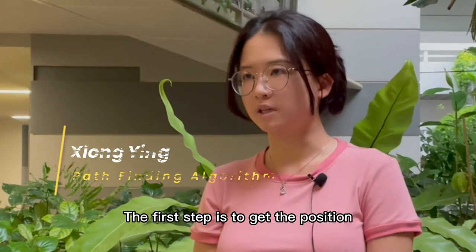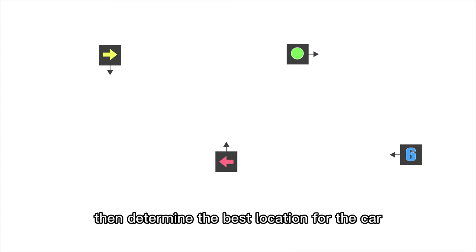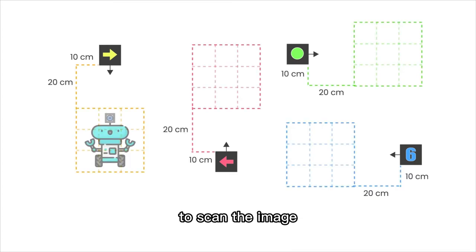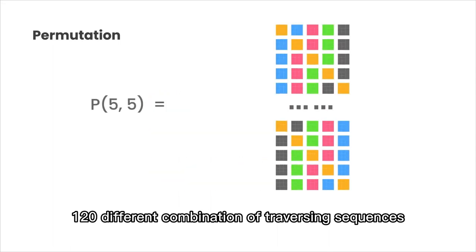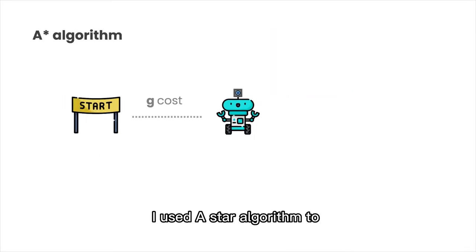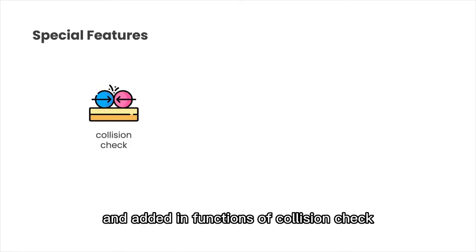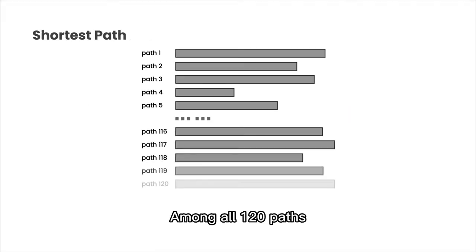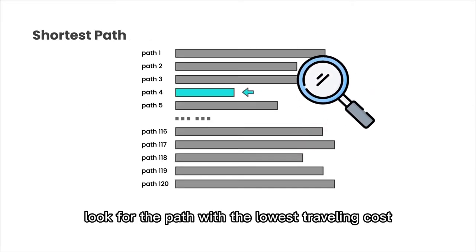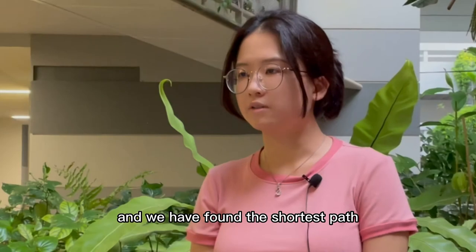The first step is to get the position and orientation of five obstacles from the Android app, then determine the best location for the car to scan the image. By permuting the five locations, we can generate 120 different combinations of traversing sequences. For each traversing sequence, I use the A-star algorithm to compute the moving cost, adding functions of collision check, obstacle avoidance, and turning clearance check. Among all 120 paths, we look for the path with the lowest travelling cost, then backtrack from the target node to the start node to find the shortest path.